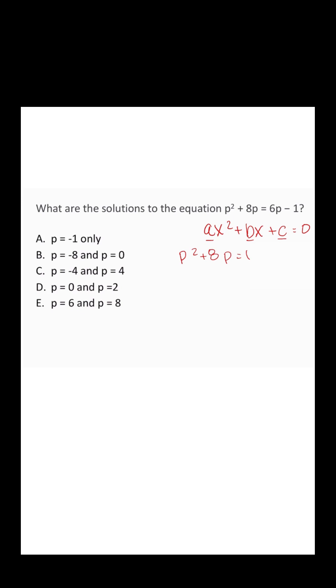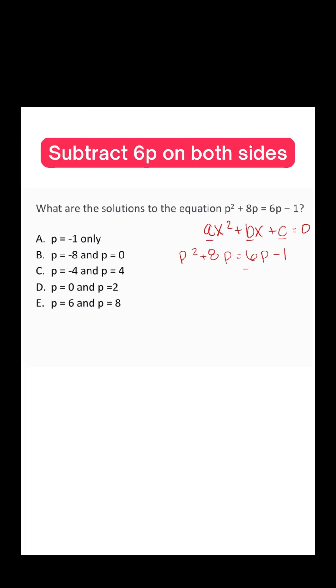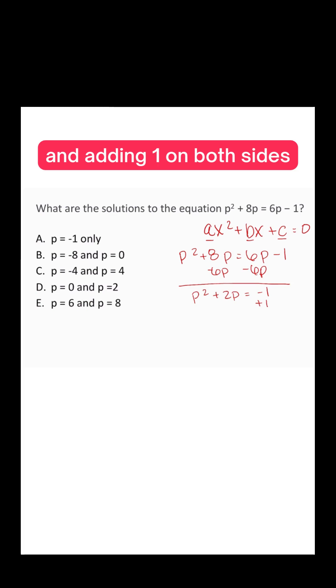But with some simple rearrangement, we can get this equation into our quadratic equation form. We can do that by first subtracting 6p on both sides and then adding 1 on both sides.